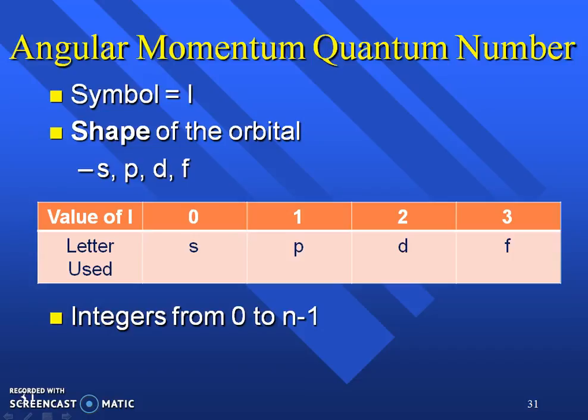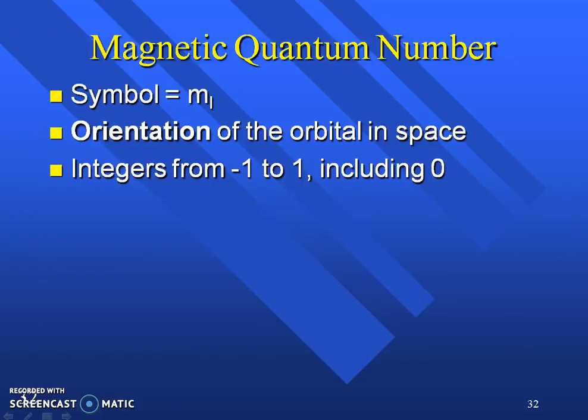The angular momentum quantum number symbol is l, and this just gives us our shape. Don't go crazy about the integers, but just know that there are four different shapes, and yes, they have a value to them. The magnetic quantum number is n sub l. It's really just the orientation. Is it going up or is it going down in that orbital?